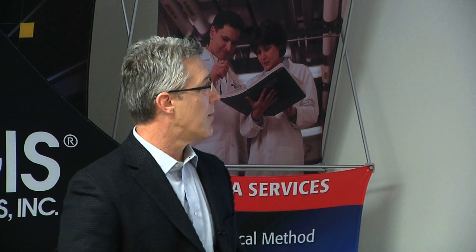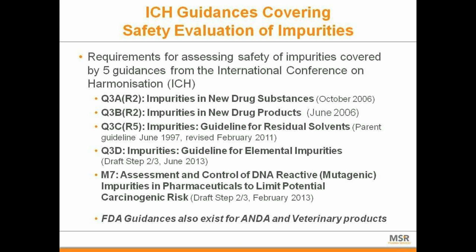These guidelines are basically documents that cover registration applications for qualification of impurities. Most of you have heard and know about these guidelines. The Q3 guidelines cover new drug substances — APIs — new drug products, and also residual solvents. There are also draft guidelines now on elemental impurities, which is very helpful for the industry.